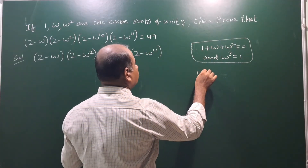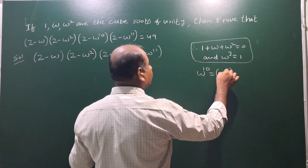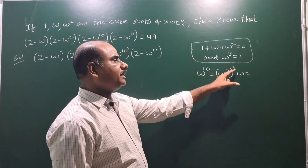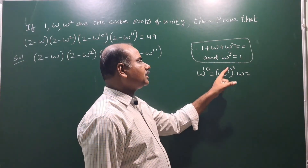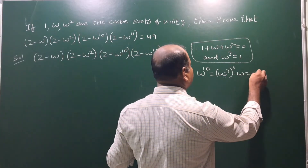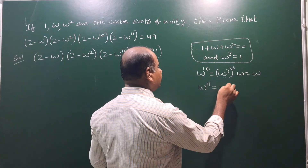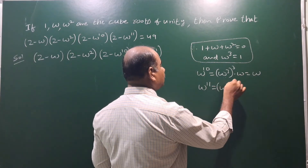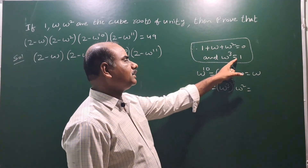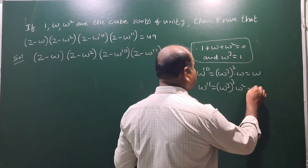Now take ω¹⁰: ω¹⁰ can be written as (ω³)³ · ω. Since ω³ = 1, we get 1³ · ω = ω. In a similar way, ω¹¹ can be written as (ω³)³ · ω². Since ω³ = 1, we get 1 · ω² = ω².